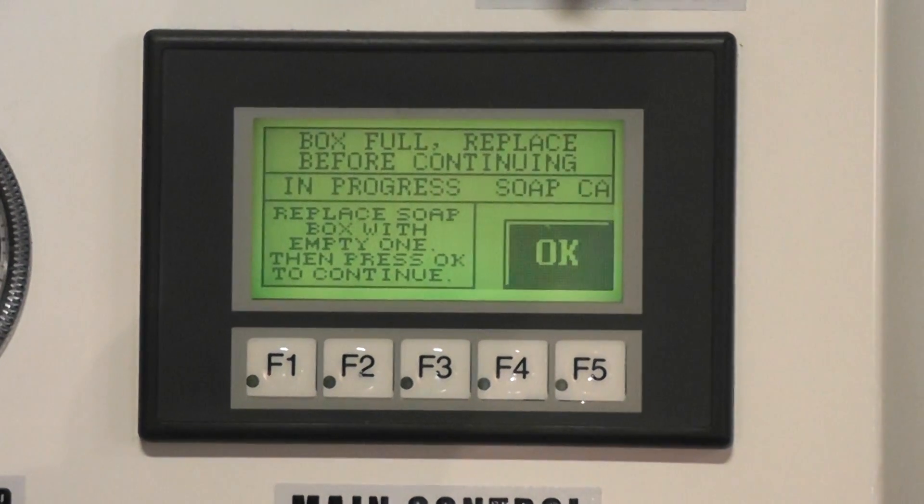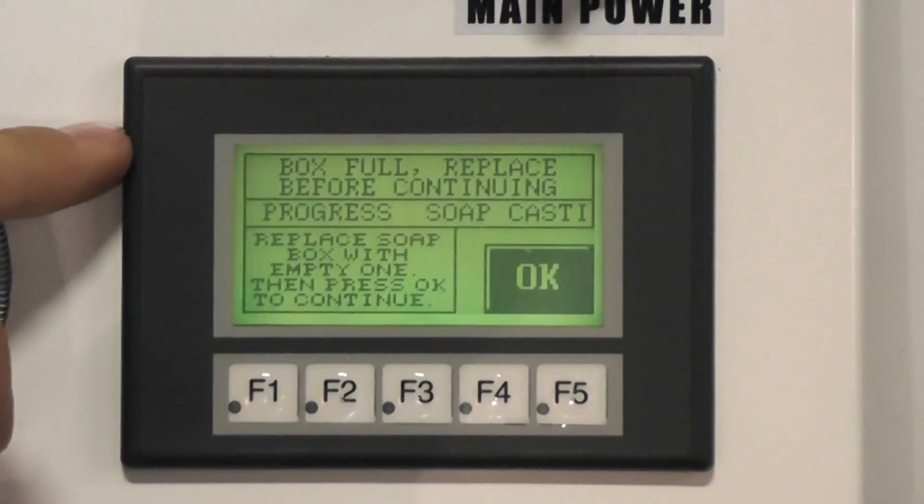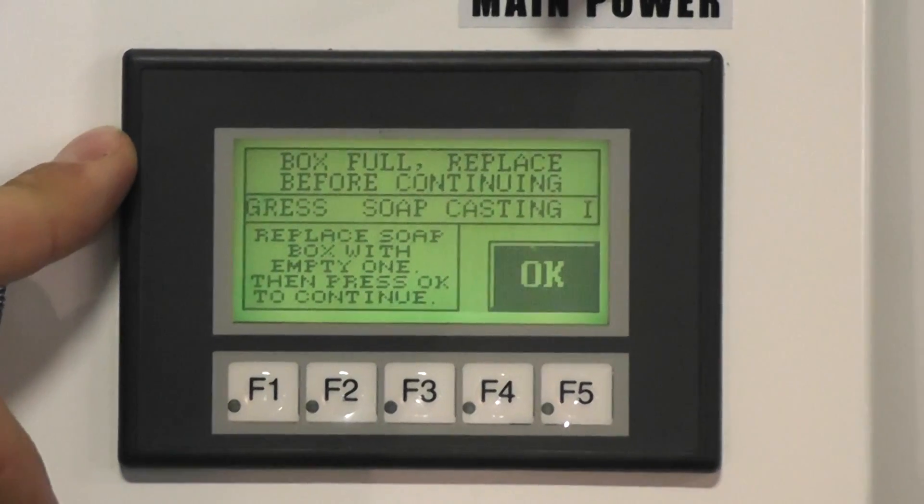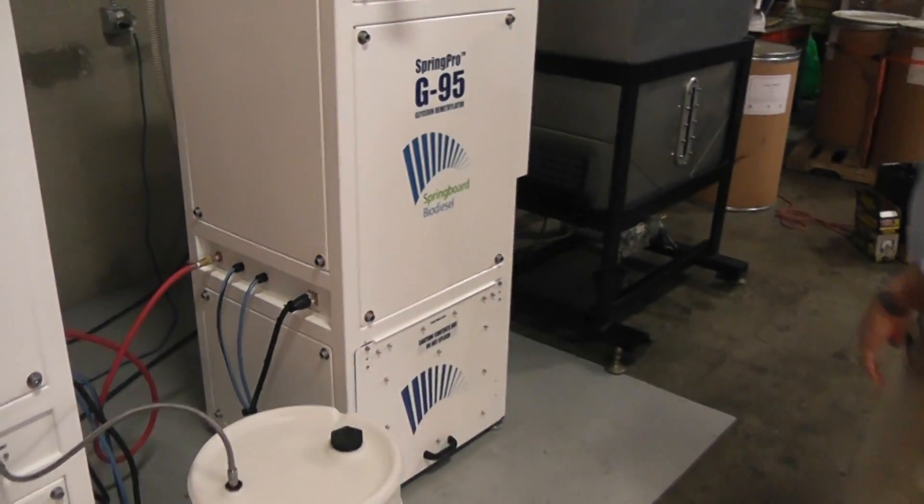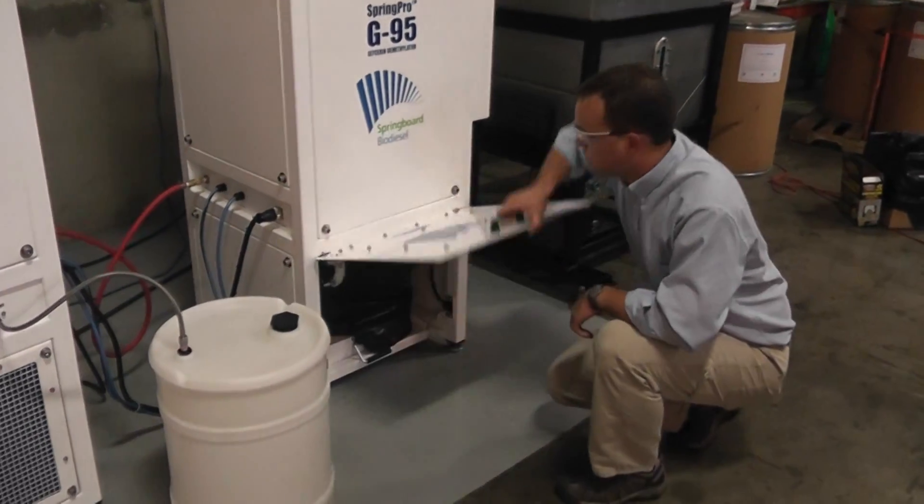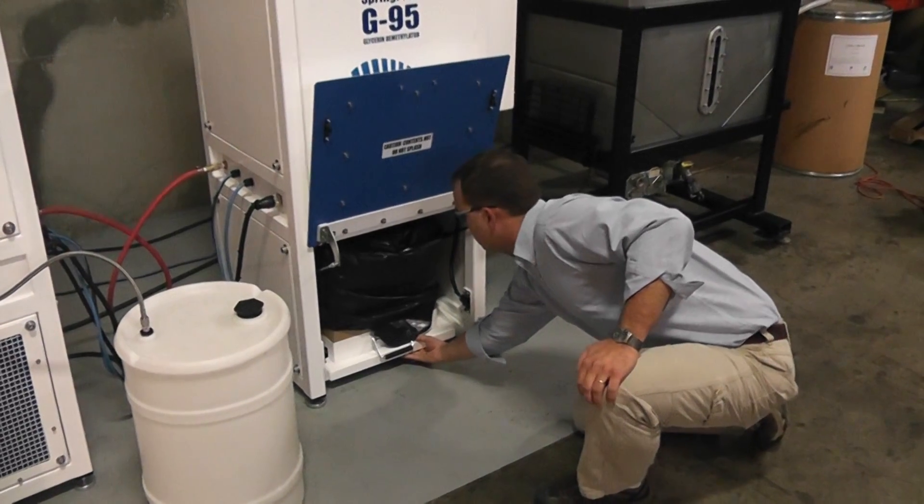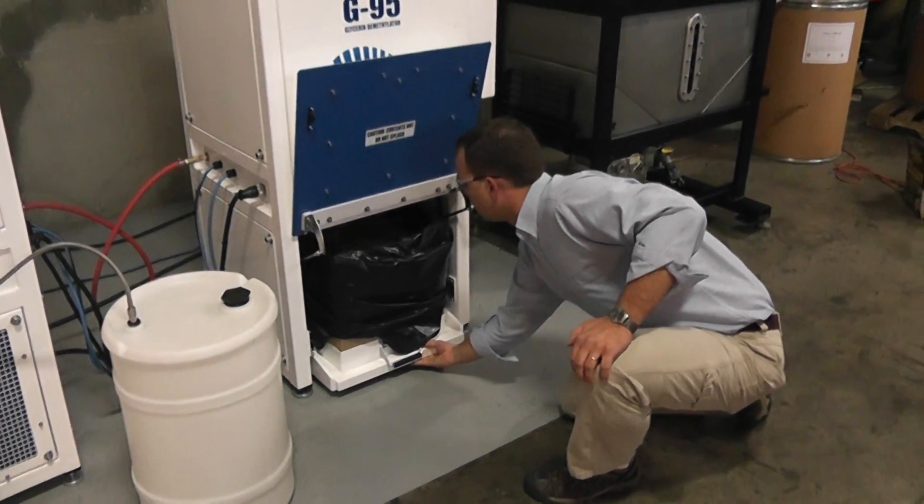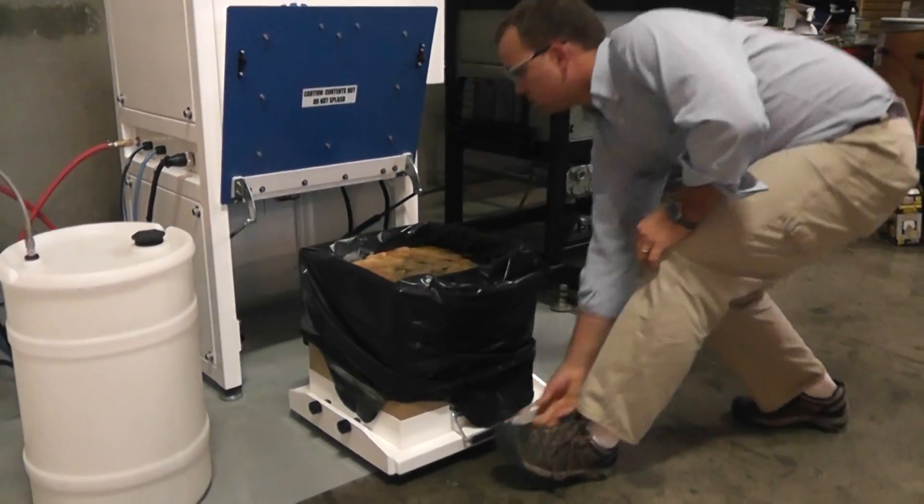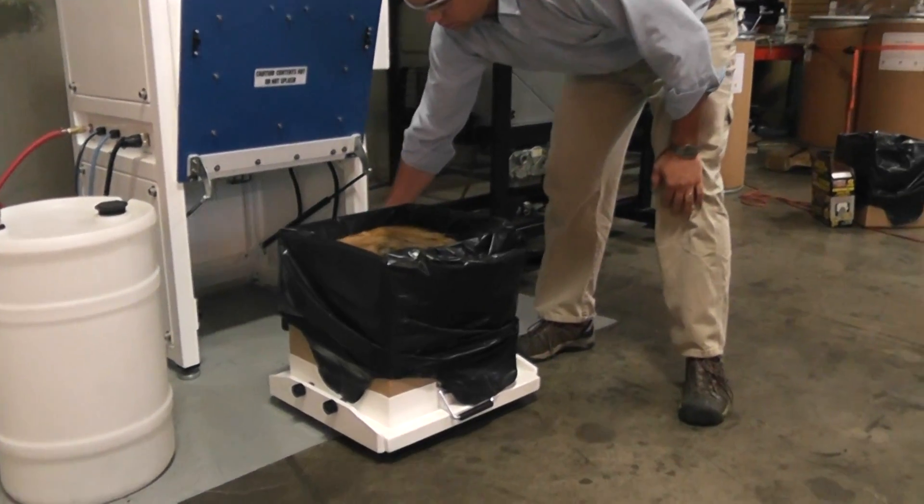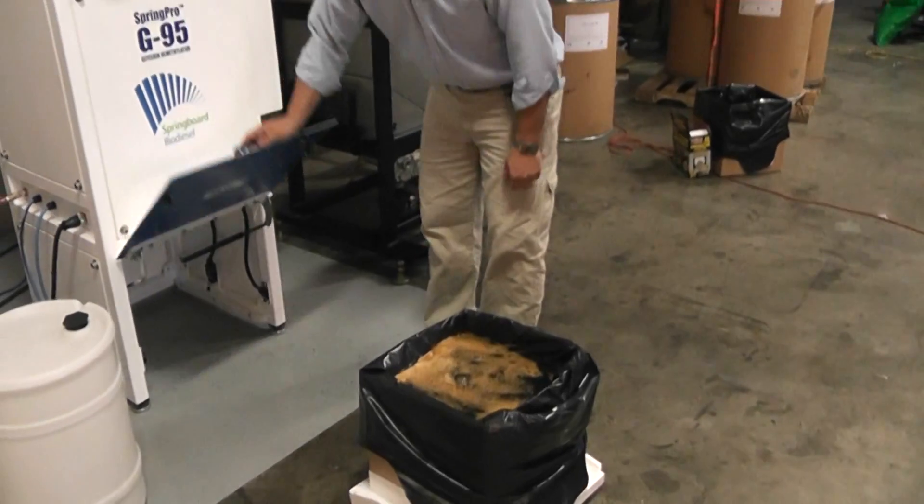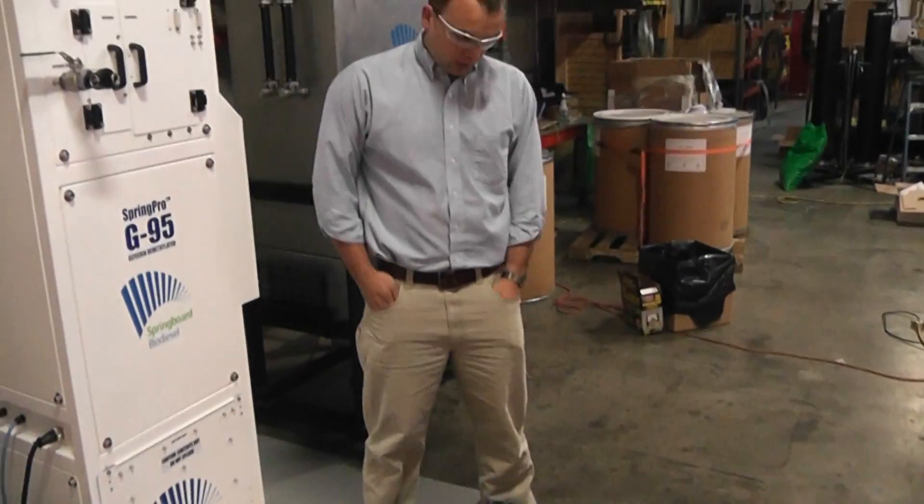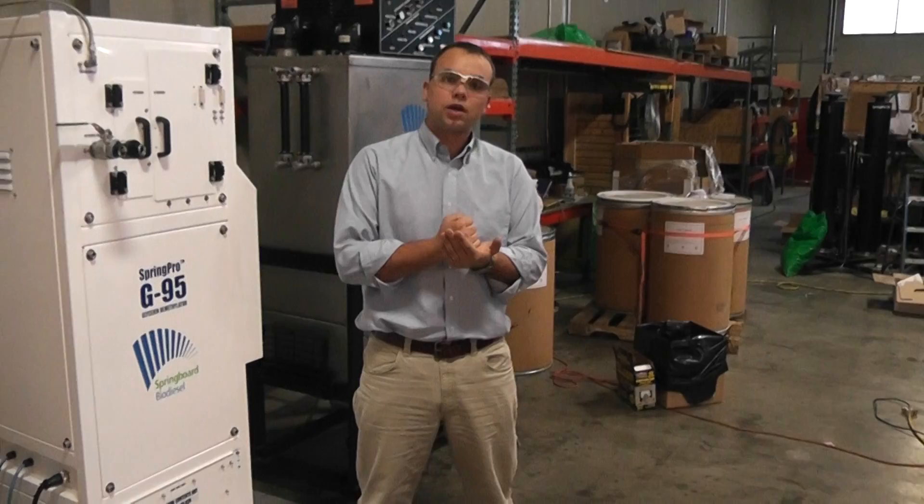Okay, our first box filled up. We've got a message here telling us our box is full and we need to replace it with another one before we continue. So I'm going to do that now. This is our molten saponified glycerin and within a day or so this will be a nice hard block of soap.